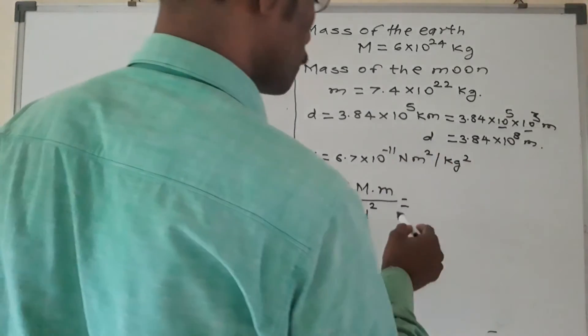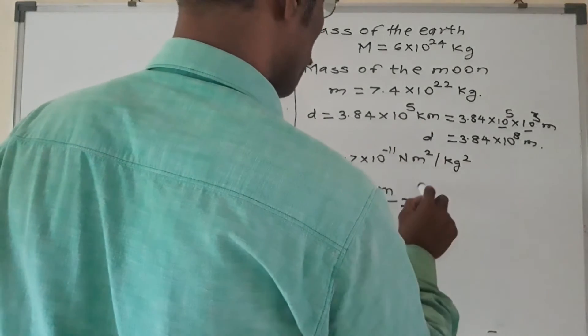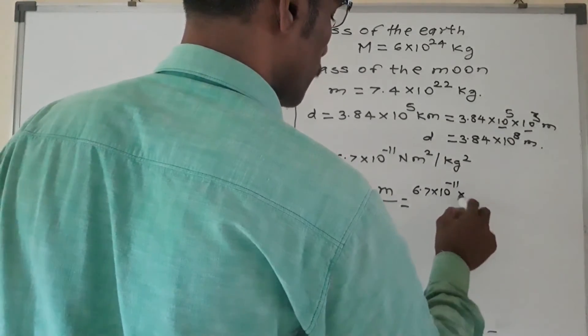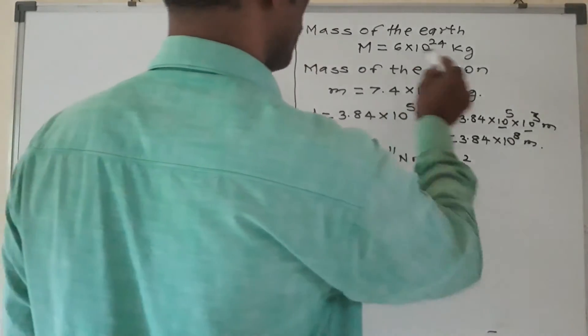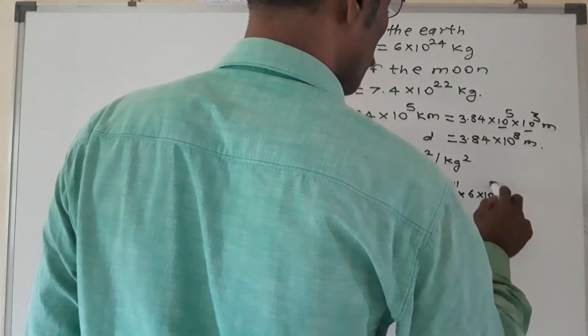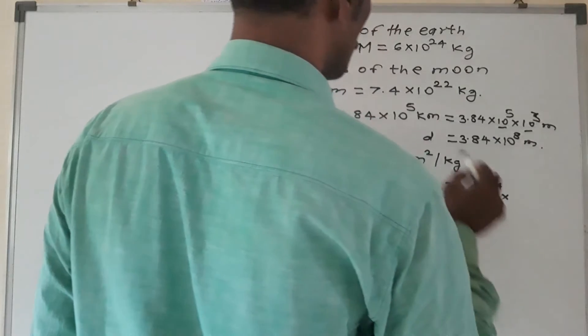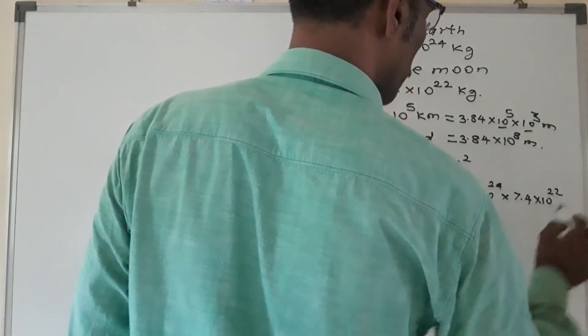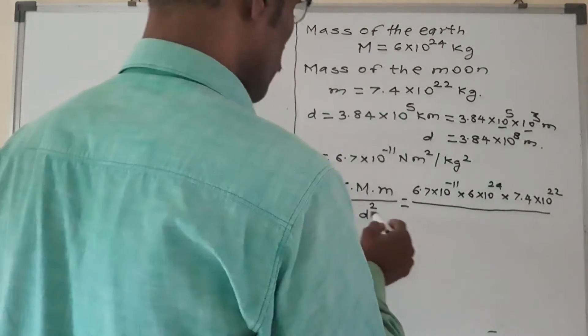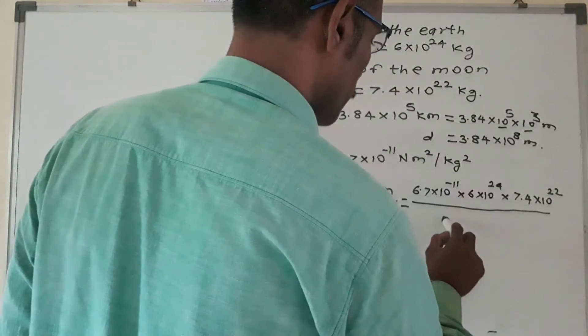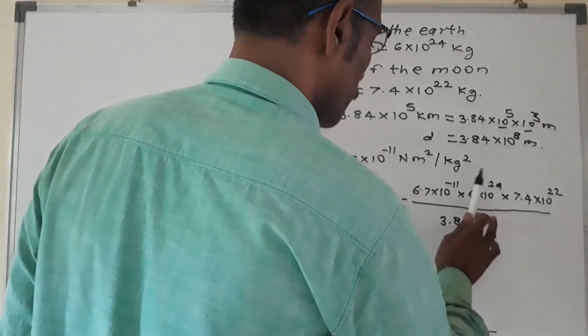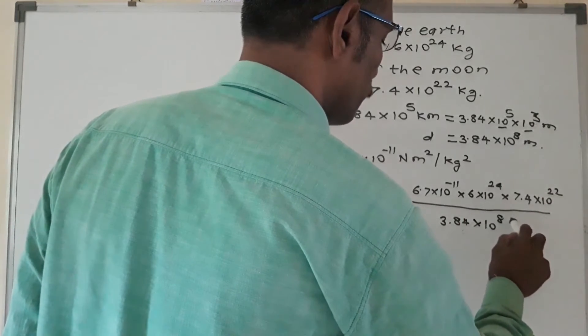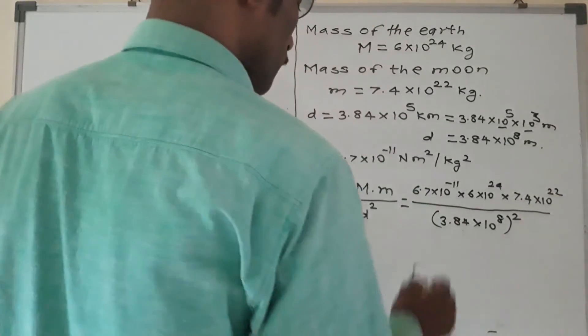Now we substitute values here. G: 6.7 into 10 raise to minus 11 into capital M: 6 into 10 raise to 24 kg, into small m: 7.4 into 10 raise to 22 kg, upon d square: 3.84 into 10 raise to 8 meter, bracket square.